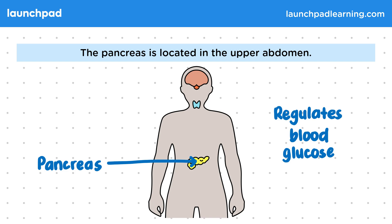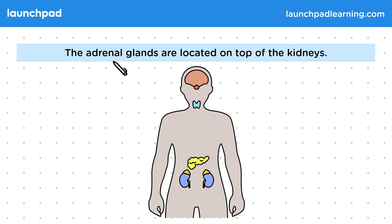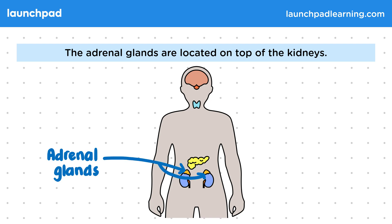Which gland produces the hormone adrenaline? The adrenal glands are located on top of the kidneys. In this diagram, they are the little orange triangles just on top of the kidneys. These produce adrenaline to prepare our bodies to respond to danger.